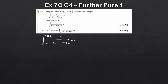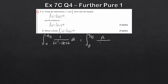We can factorize 6t² - 13t + 6 and then use partial fractions. Factorizing, we split 1/(6t² - 13t + 6) into A/(3 - 2t) + B/(2 - 3t). We then set this equal to 1 and solve for A and B using the standard partial fractions method.